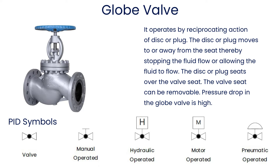Globe valve operates by reciprocating action of a disk or plug. The disk or plug moves to or away from the seat, thereby stopping the fluid flow or allowing the fluid to flow. The disk or plug seats over the valve seat, which can be removable. Pressure drop in the globe valve is high.